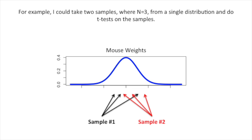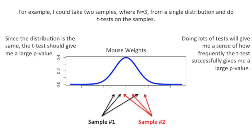For example, I could take two samples where n equals 3 from a single distribution and do t-tests on the samples. In this case, n equals the number of measurements we take within each sample. Since the distribution is the same, the t-test should give me a large p-value. Doing lots of tests will give me a sense of how frequently the t-test successfully gives me a large p-value.